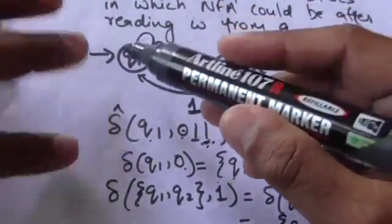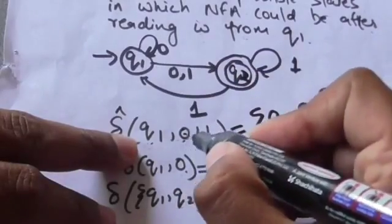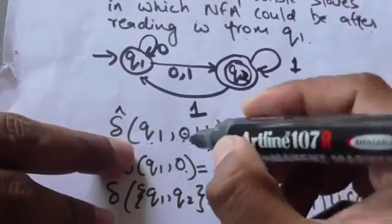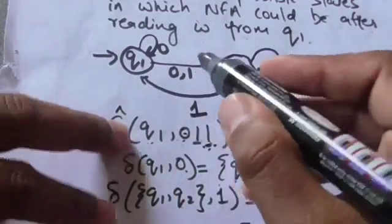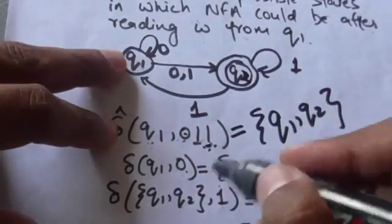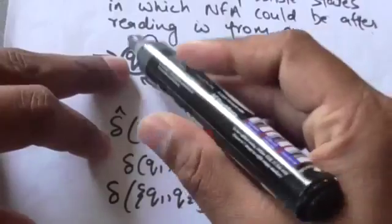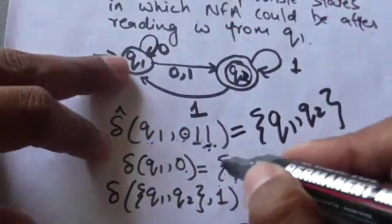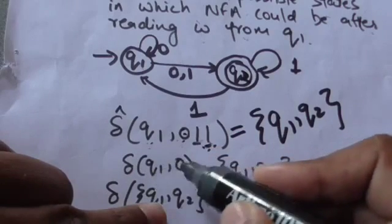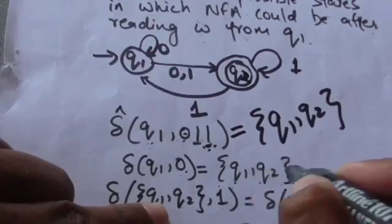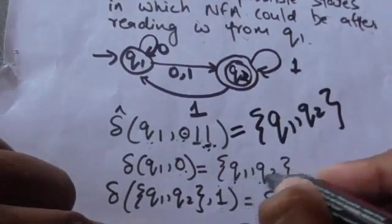Now, we have to find out the output of the extended transition function for present state q1 and string of input symbols 0 1 1. First, we apply the first input symbol of the string, that is 0, to the present state q1. q1 has two transitions for input symbol 0 — it can either go to state q2 or remain in state q1. So the output of the transition function for present state q1 and input symbol 0 is a set of states {q1, q2}. Now apply the second input symbol of the string, that is 1, to this set of states.